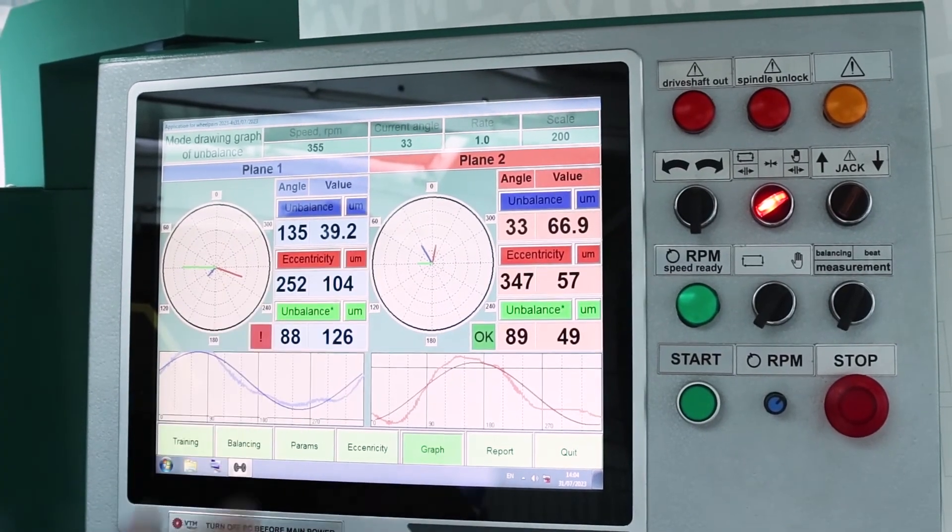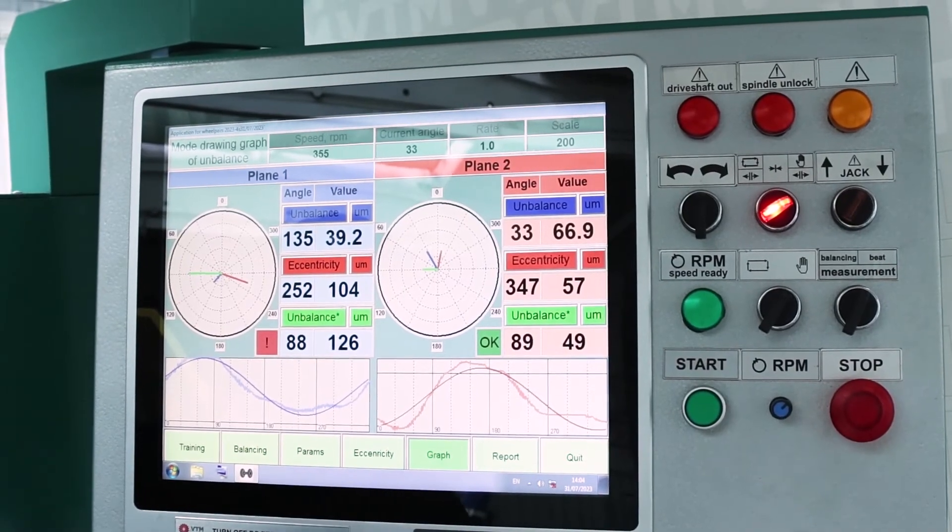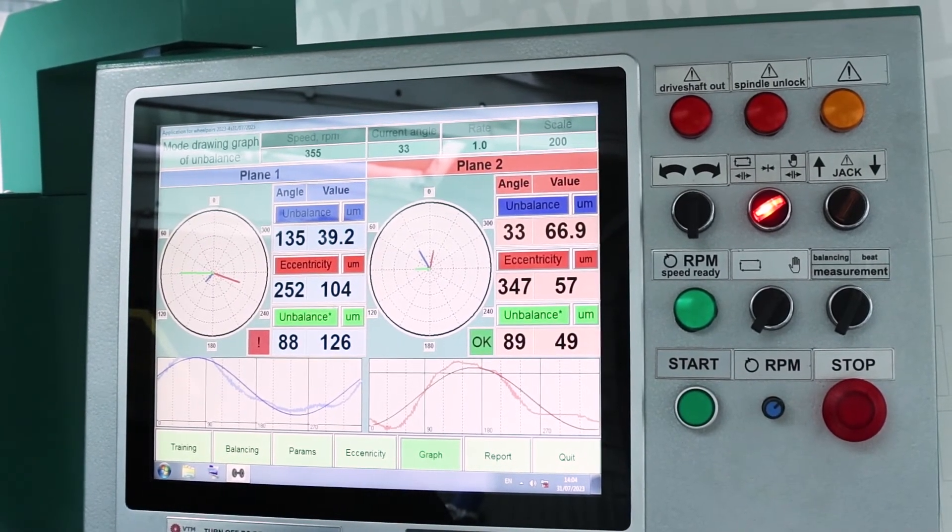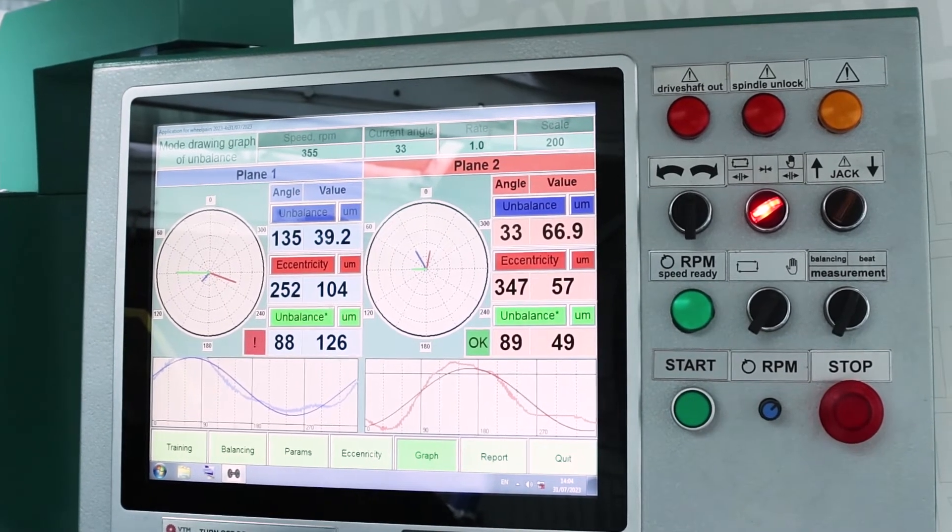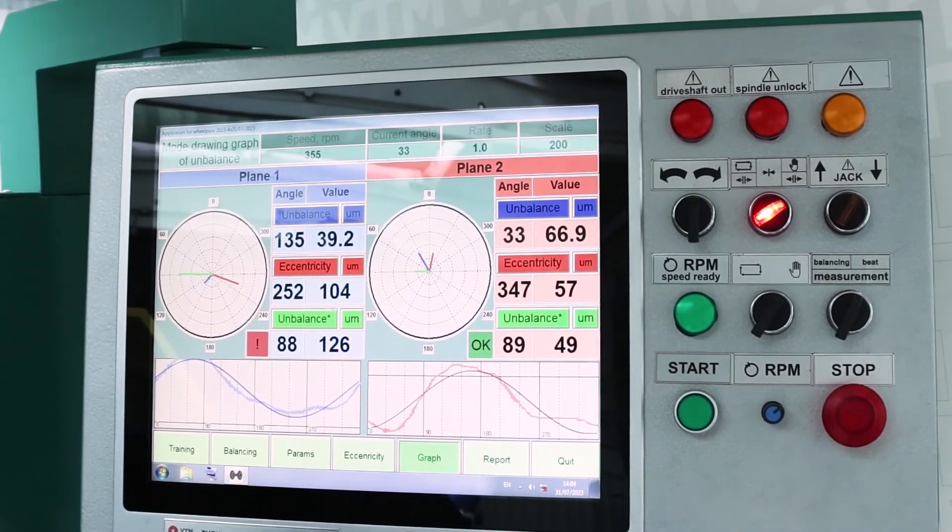The blue color indicates the vector in which the imbalance is directed. The red graph is our eccentricity, that is, our run-out, and the green is the resulting graph.